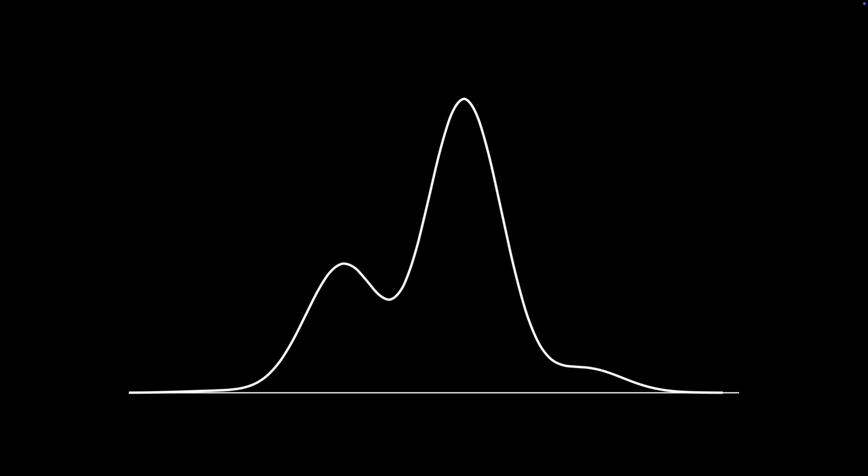To build some intuition to get started, I want to brainstorm a bit how you as a human might try to solve the task that MCMC solves. So here's the setup. We're given some probability density, and we're told to produce a set of samples that look like they come from this density.